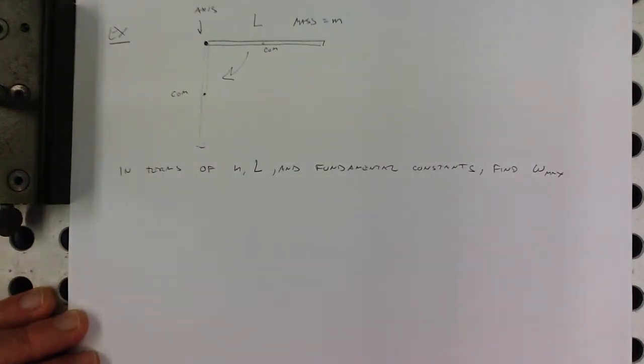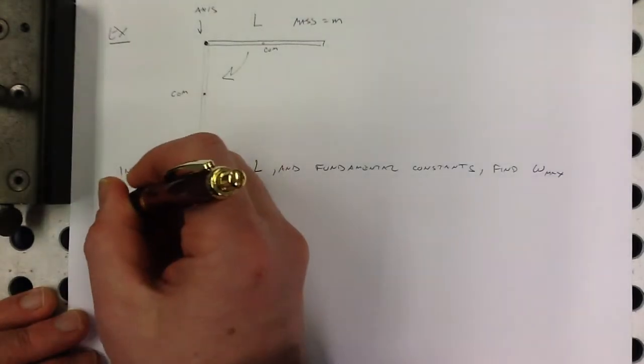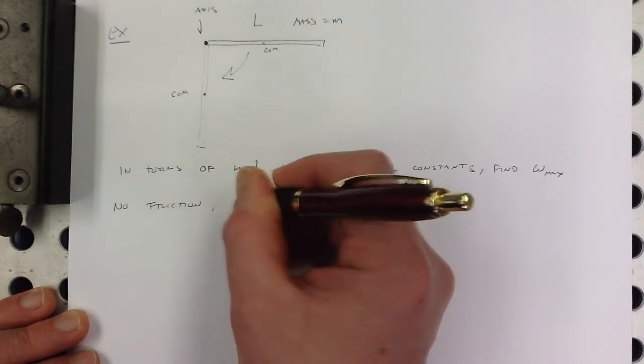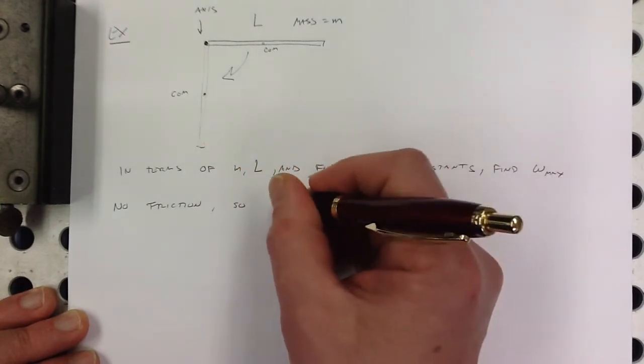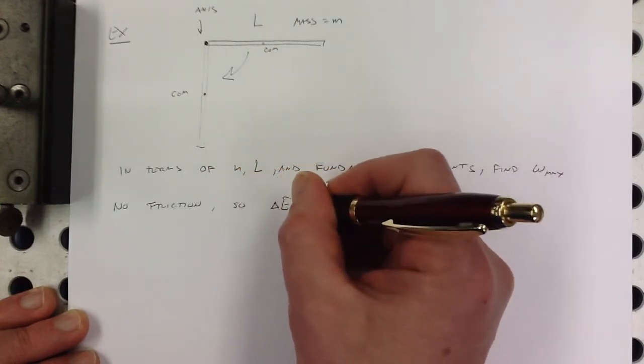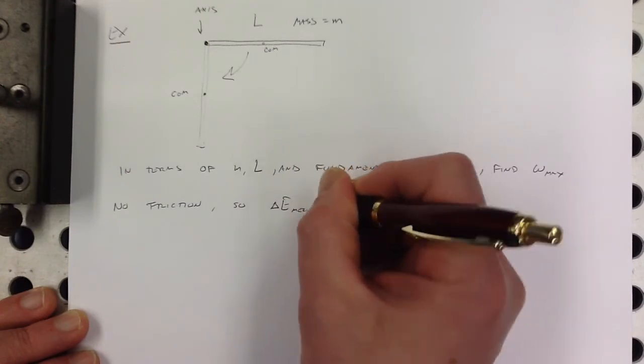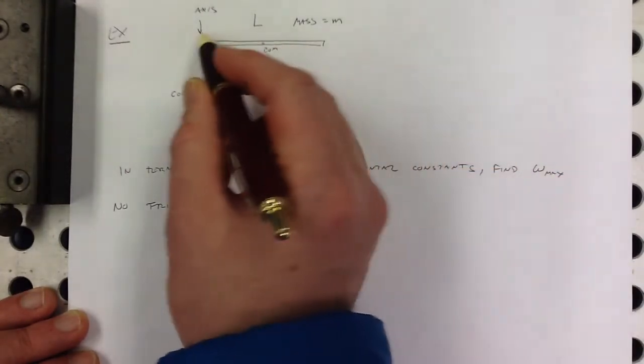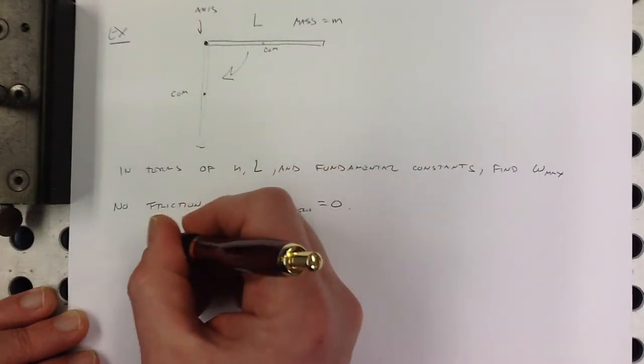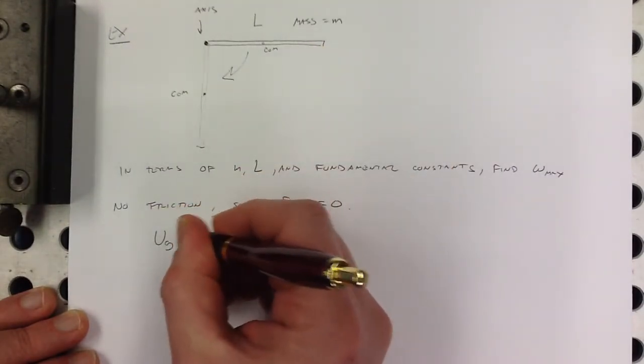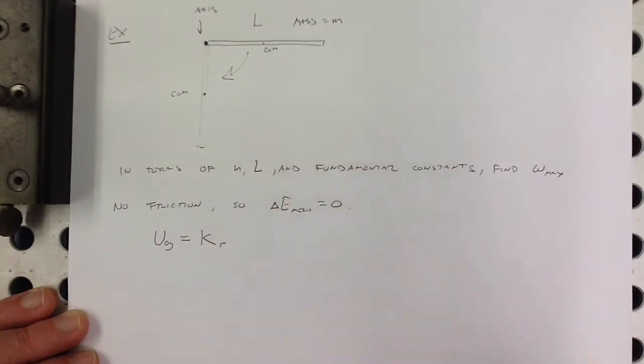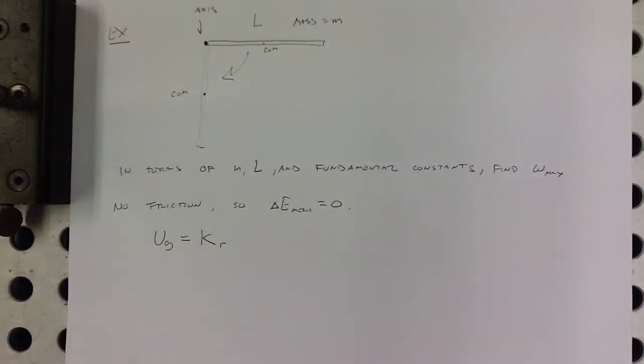This is just an energy problem. There's no friction, so the total mechanical energy, the change in that is zero. Which means that here, before it's moving, it's all gravitational potential energy. And then here at the bottom, it's all kinetic energy. I'm just going to put a little r there to remind us that it is rotational kinetic energy.